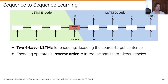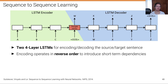They used four-layer LSTMs for encoding and decoding the source and target sentence respectively, where encoding operates in reverse order of the input sentence. Let's assume we want to translate a sentence from English to French — we reverse the order of the input sentence, and this is advantageous because it introduces short-term dependencies. We end with the first word, and then the decoder starts to decode with the first word in the target language.